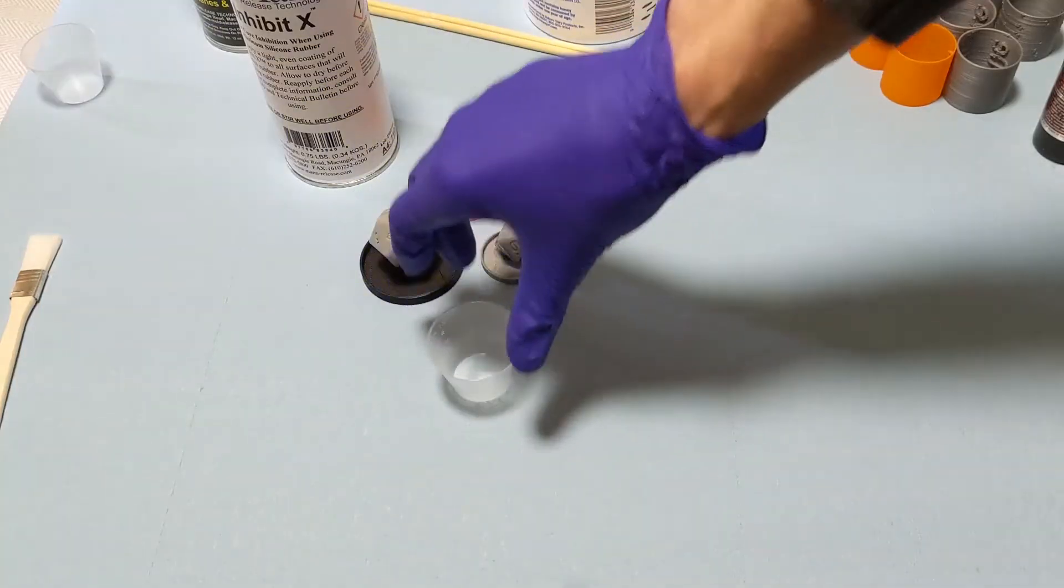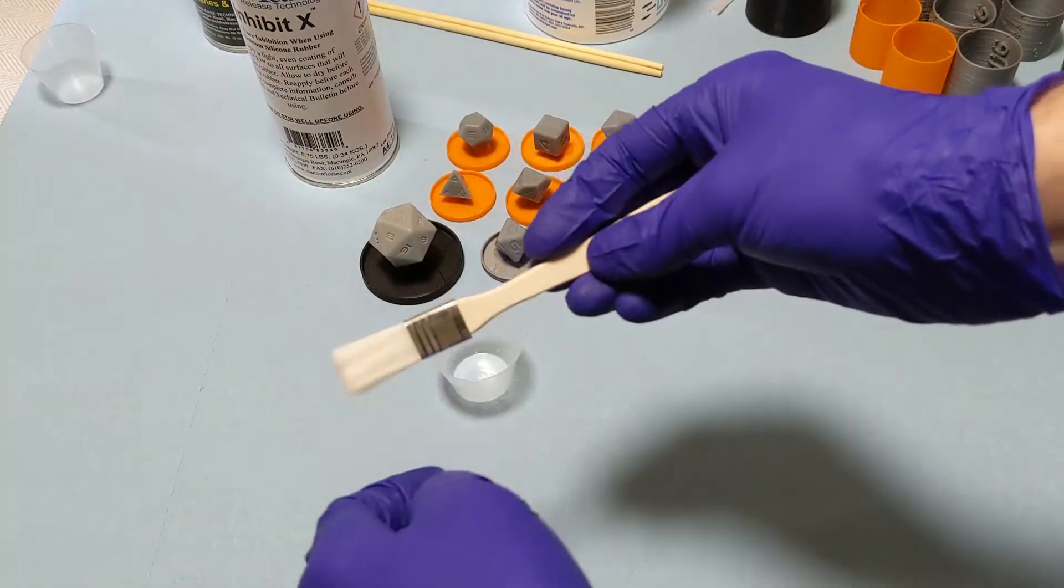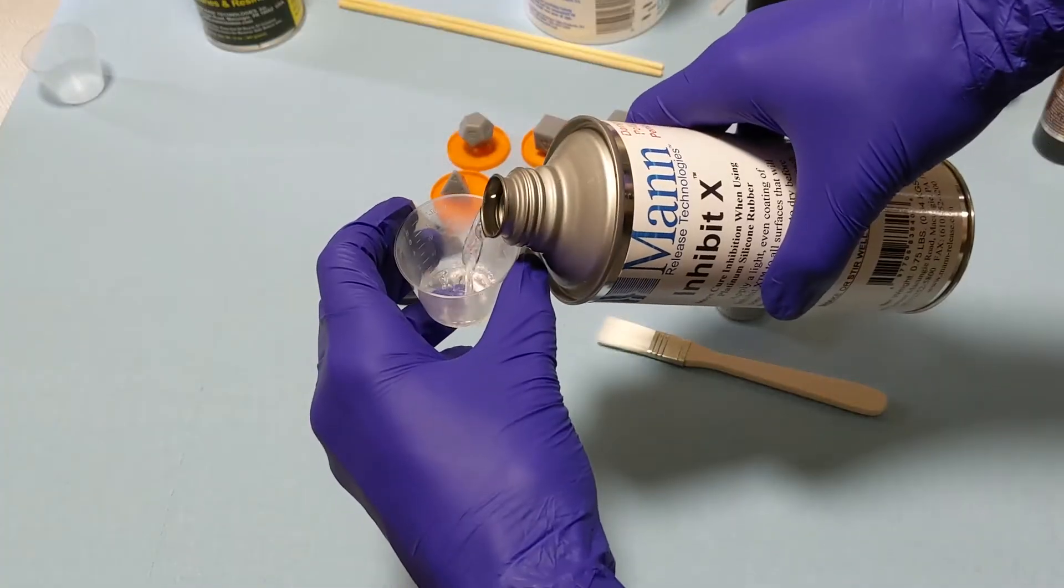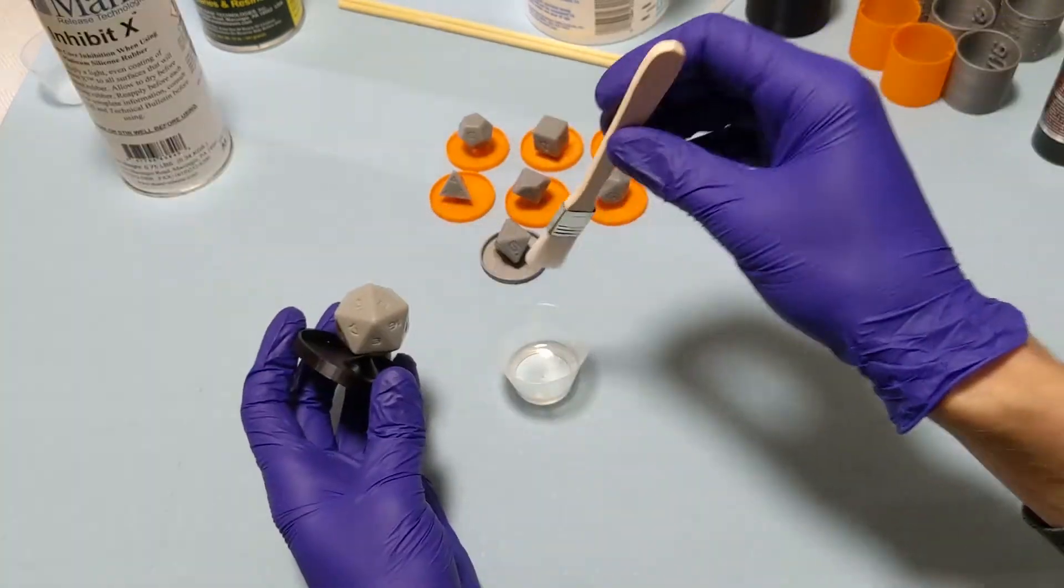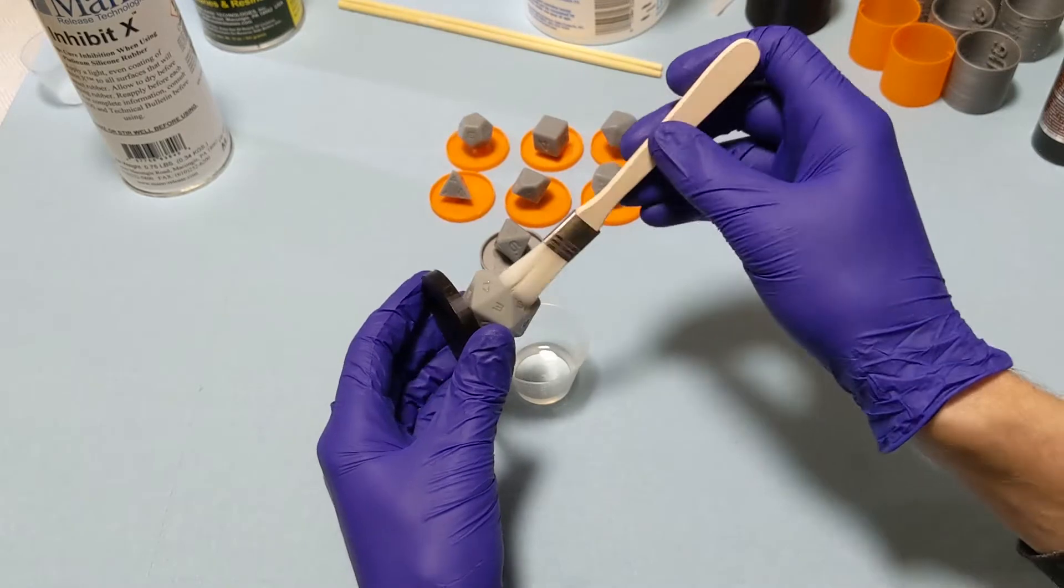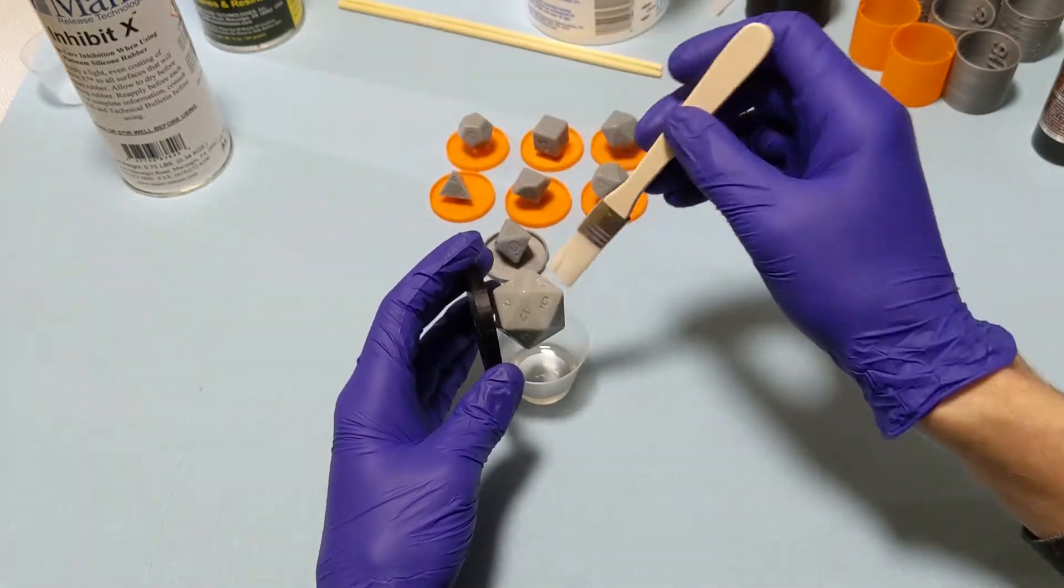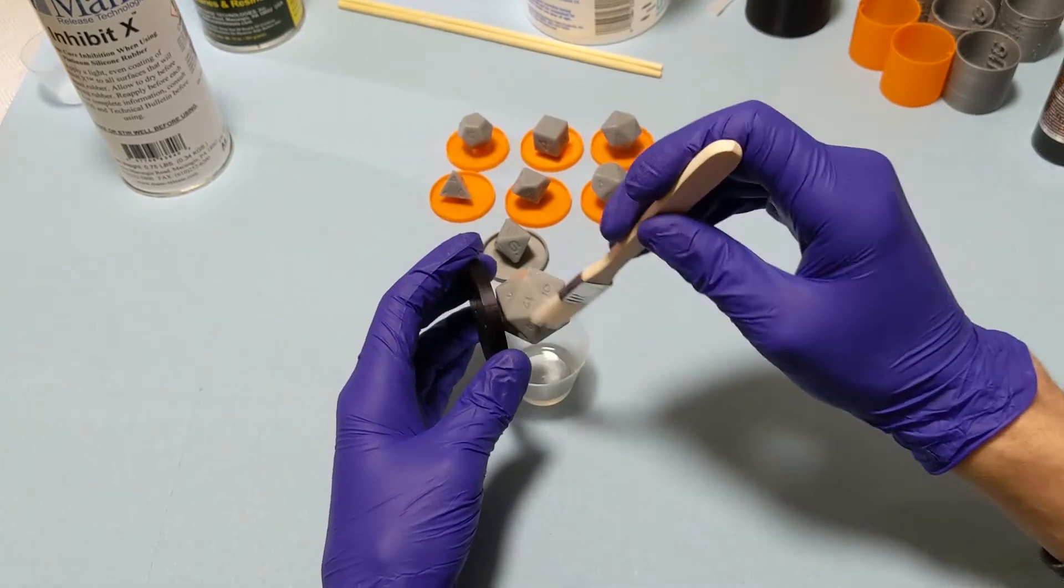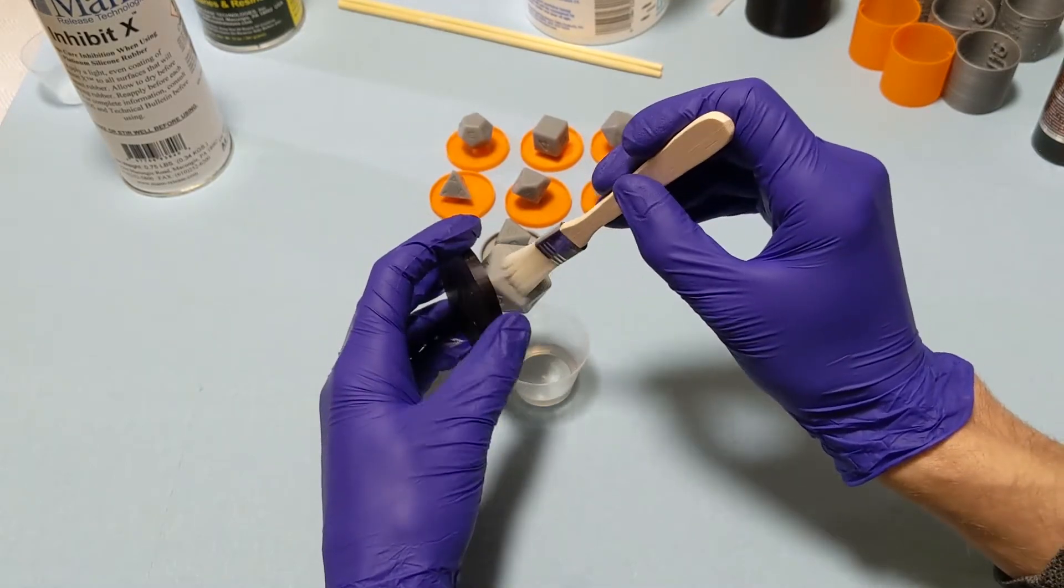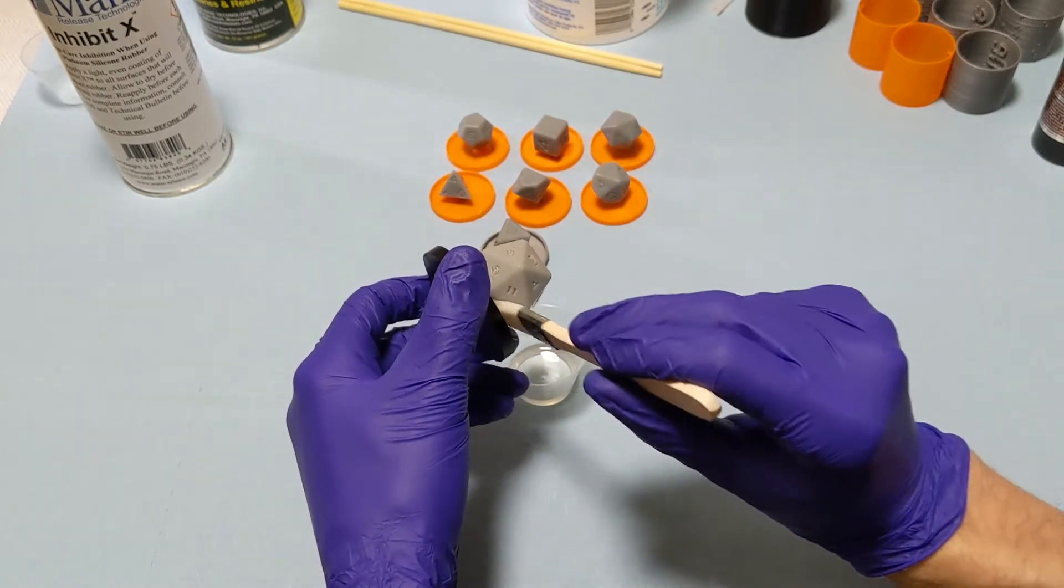If you're going to be making multiple sets, no problem, definitely worth it. So I shake up my Inhibit X and I get it ready to apply. The directions say to use a brush, so that's what I'm going to do, even though it would make more sense to me to just dip it in the liquid. But all you have to do is make sure that it gets all over in the numbers and has a good thin layer. It's basically like water, so just get it all wet and it's supposed to dry. I'll go ahead and do that to all of my dice.